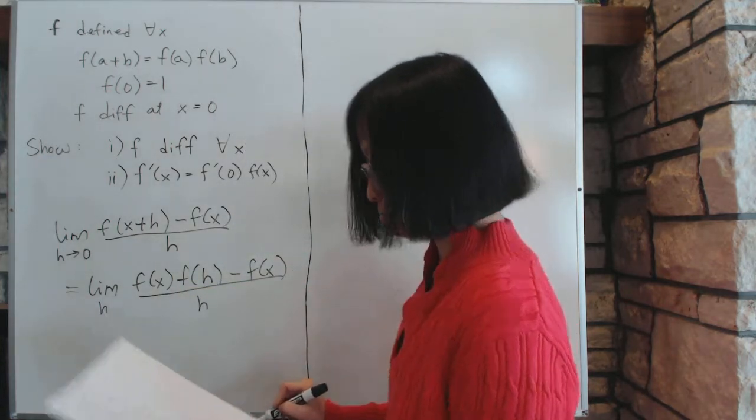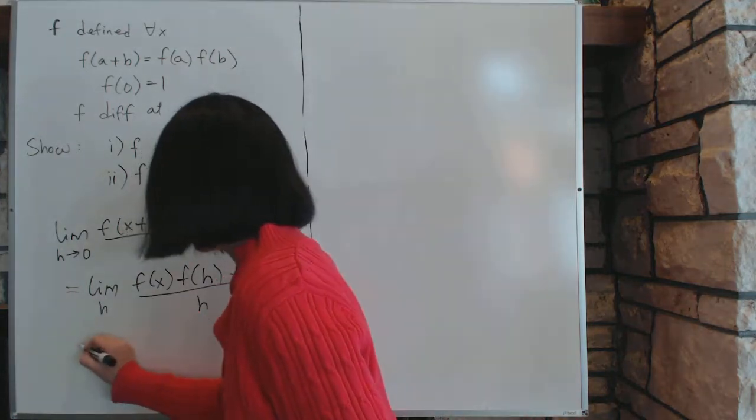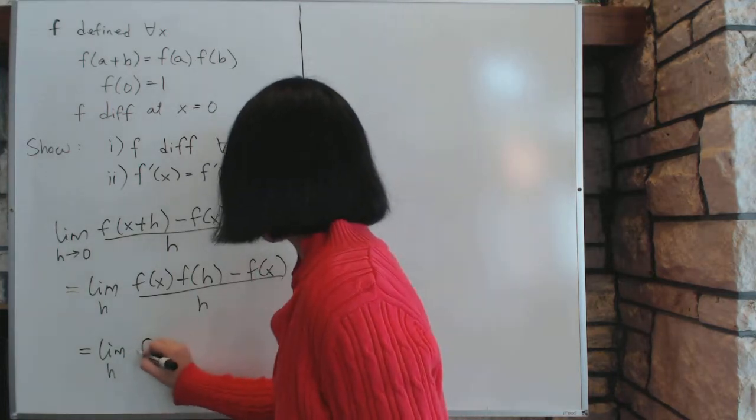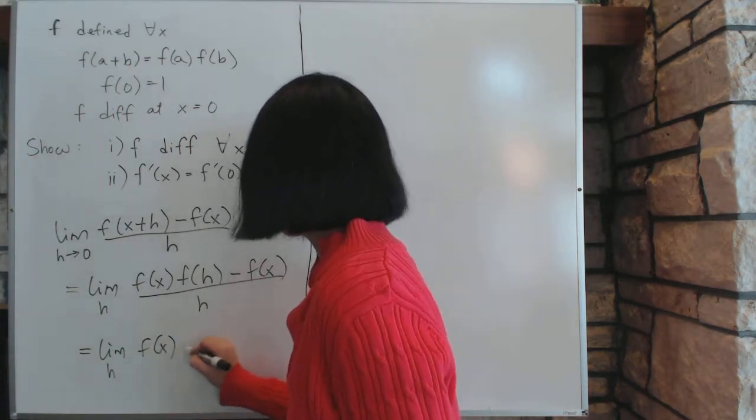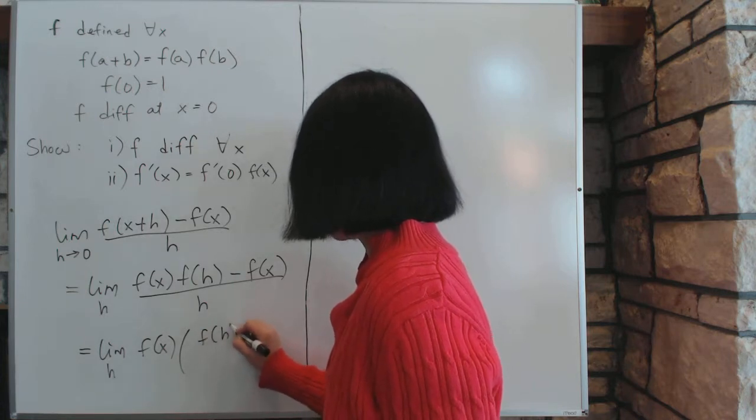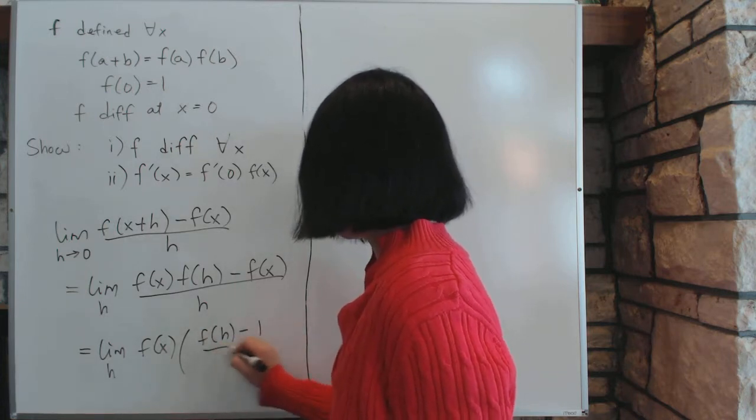And we will clean this up a little bit, do algebra—one must always do algebra. The limit as h goes to 0, we'll take f(x) out, and we have [f(h) - 1]/h.